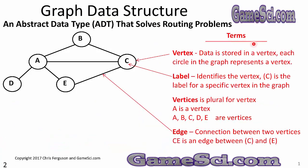It is important to learn the terms of the graph data structure. A vertex is where data is stored — each circle in a graph represents a vertex, equivalent to a node in a tree. A label identifies the vertex; C is the label for a specific vertex. Vertices is plural for vertex. A, B, C, D, and E are all vertices. An edge is a connection between two vertices — C-E is the edge between vertex C and vertex E.